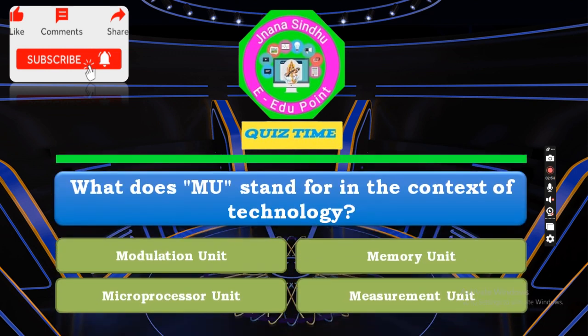What does MU stand for in the context of technology? Option A: Modulation Unit. Option B: Memory Unit. Option C: Microprocessor Unit. Option D: Measurement Unit. Your time starts now.